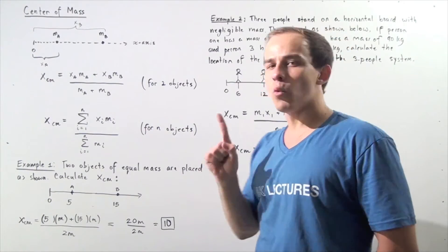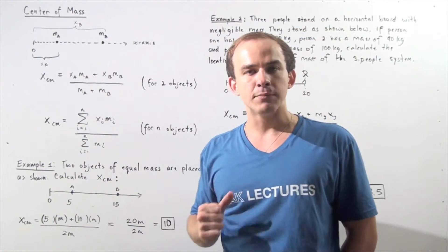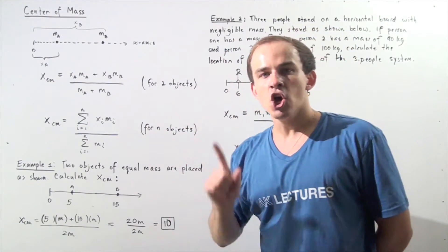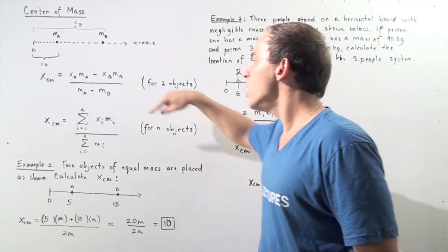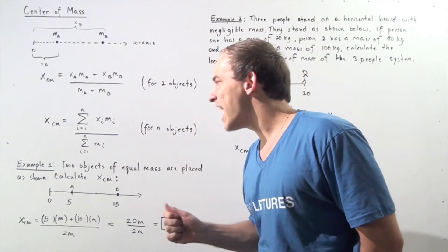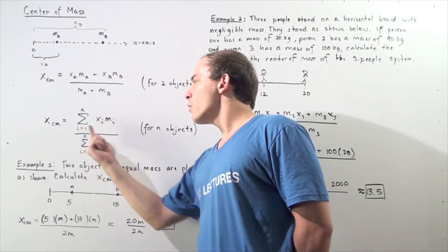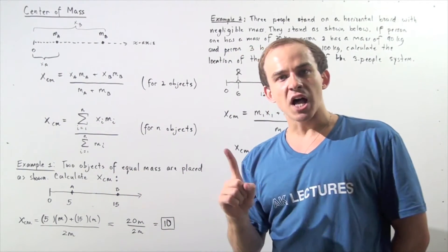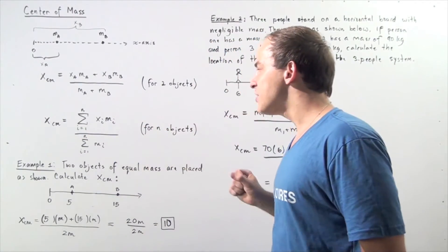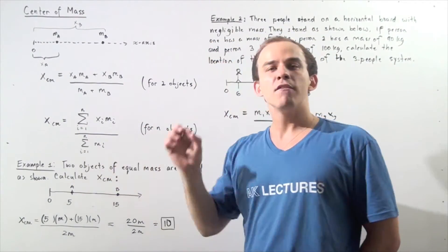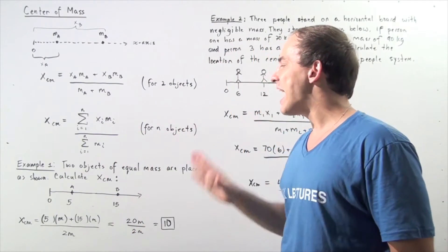This formula only works for two objects. If we have n objects, we use the following formula: we take the sum of the products Xi times Mi, where i begins with the first object and ends with the nth object, and divide that by the sum of the masses of all the objects in our system.